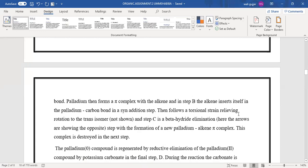Then follows a triphenyl strain relieving rotation to the trans isomer, and in the third step, it is the beta-hydride elimination step with the formation of a new palladium-alkene pi-complex. This complex is destroyed in the next step.